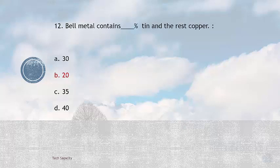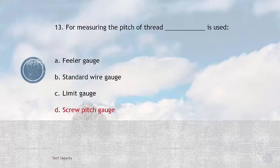Bell metal contains what percentage of tin and the rest copper. It's an alloy, a type of bronze. Bell metal contains 20 to 22 percentage tin and the rest will be copper. Bronze is 11 to 12 percentage tin, but bell metal is 20 to 22 percentage tin. So the answer is 20 percentage.